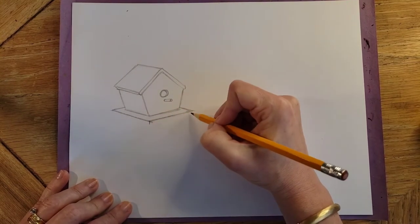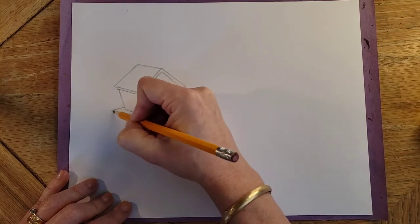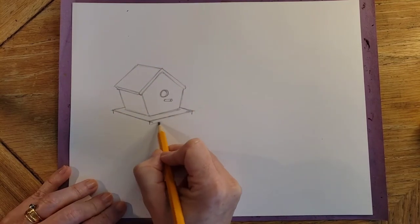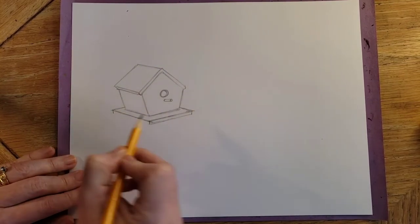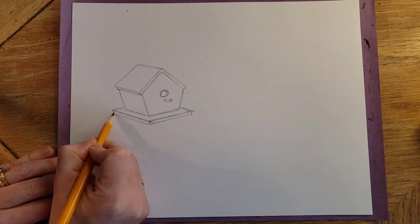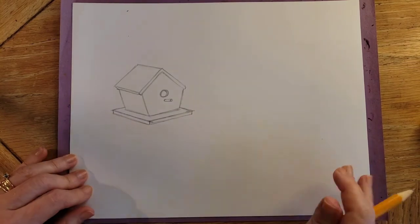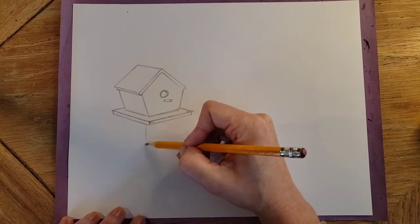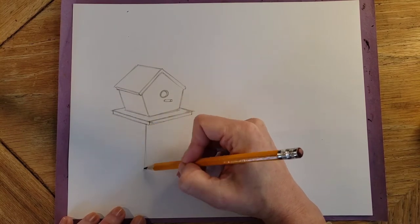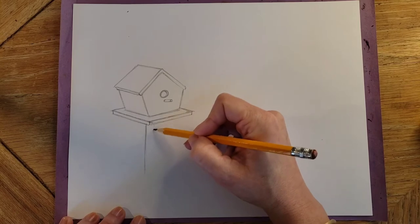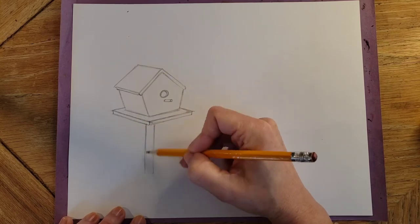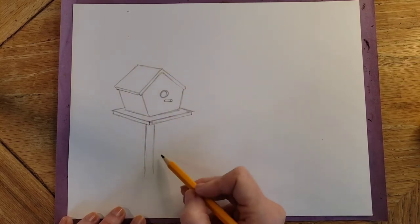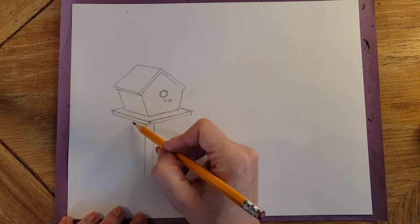And then you can come down from each corner. And then just do it again, right here. And here. So now, right, you put a post down under here. Now you have a lot of fun with all the different things you can do with this birdhouse. So you can have a beautiful vine growing up it with flowers on it.